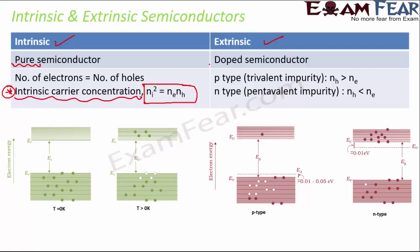Extrinsic semiconductors are doped semiconductors — they have some impurity mixed in. There are two types: P-type and N-type. P-type extrinsic semiconductor is formed when a trivalent impurity is added — one with a valency of three. Examples of trivalent impurities are boron, aluminium, and gallium, all of which have three valence electrons.